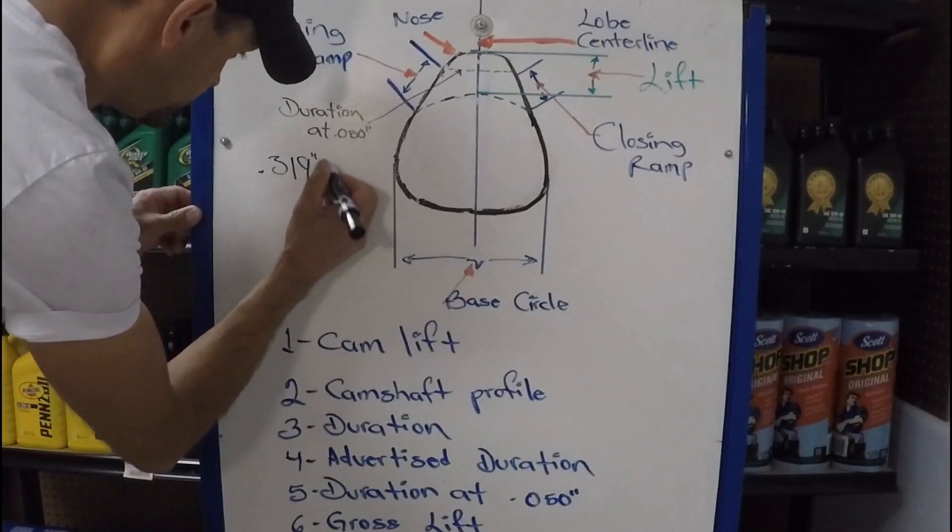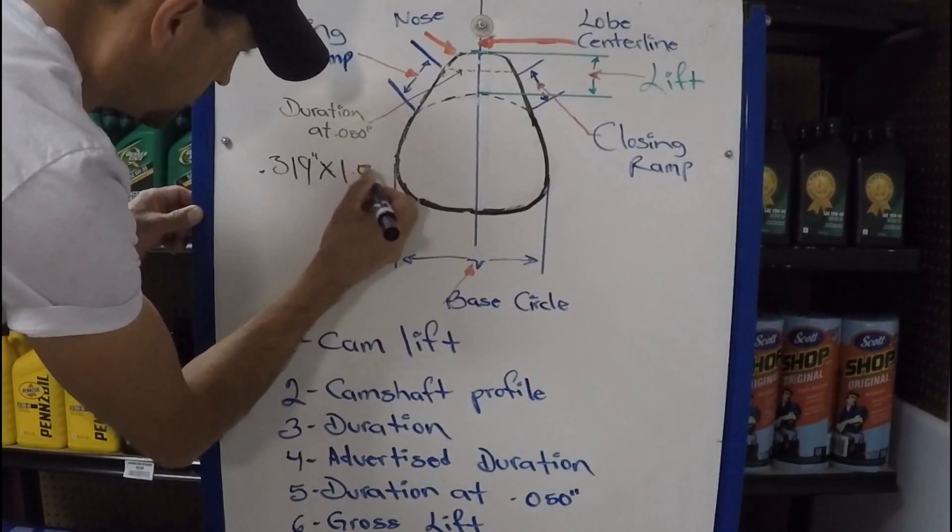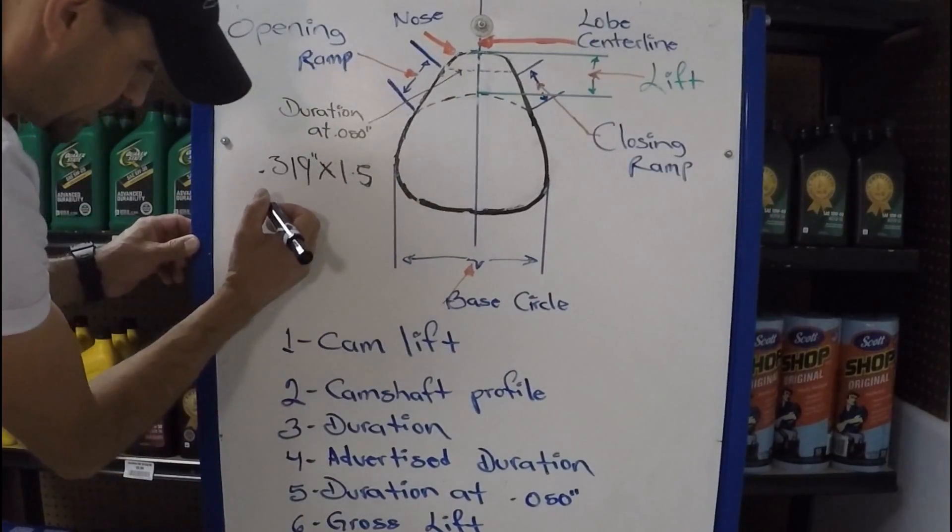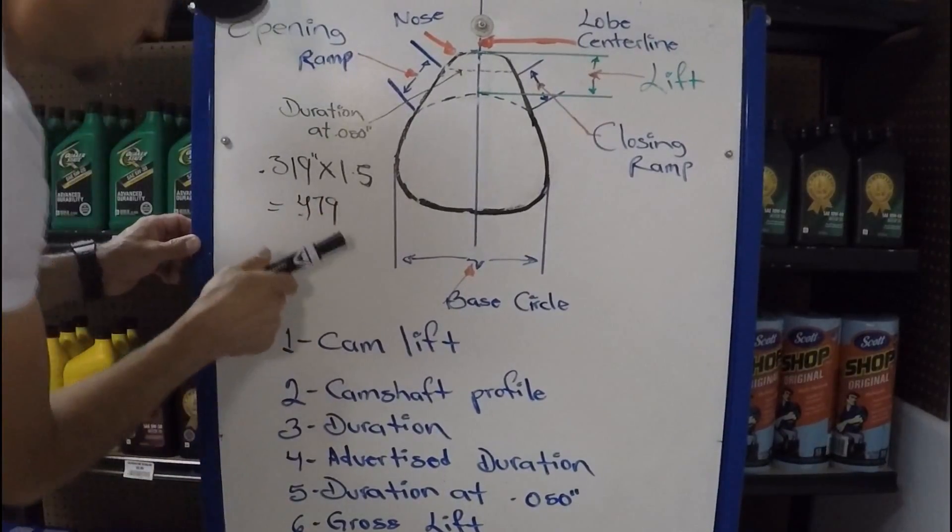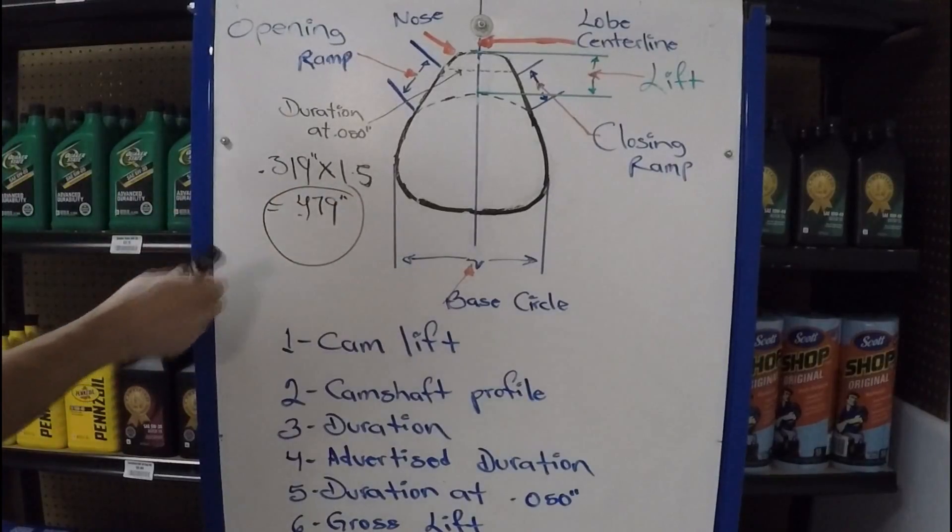And if we multiply that, let's say, at 1.5, which is very common, 1.5 rocker arm ratio. So, what we're going to have is 479 thousandths of an inch of overall lift, gross lift, at that point.